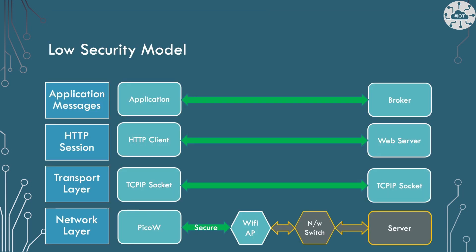Our transport layer connects our device to the web server. It sits underneath our HTTP protocol and on top of the network layer. At the bottom of our stack there can be lots of physical devices our data passes through — the PicoW connects to an access point or router, then switches and routers across the internet, until it reaches the server. That leaves lots of places where eavesdropping could happen and our data be stolen.